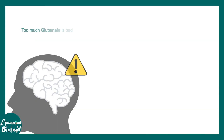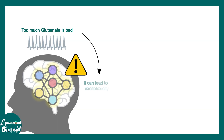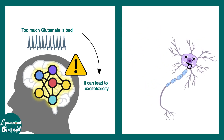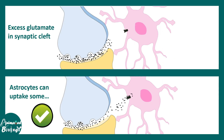Too much excitatory drive from glutamate is actually bad, and it leads to runaway excitotoxicity in the brain, which results in neuronal death. So how does the astrocyte help? Excess glutamate in the synaptic cleft can be taken up by astrocytes, which helps the system clear up excess glutamate and prevents the circuit from being damaged by too much excitability.